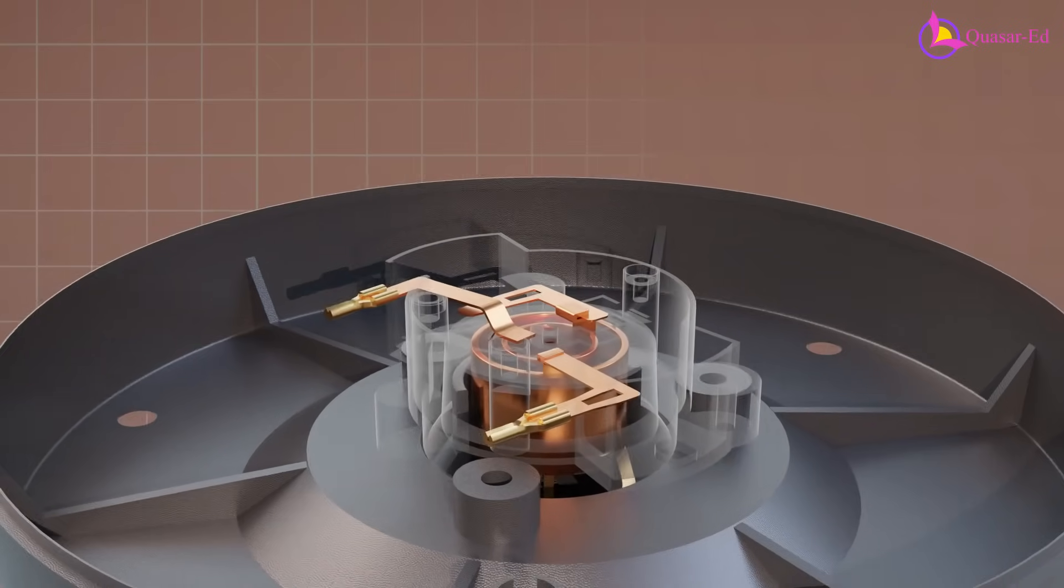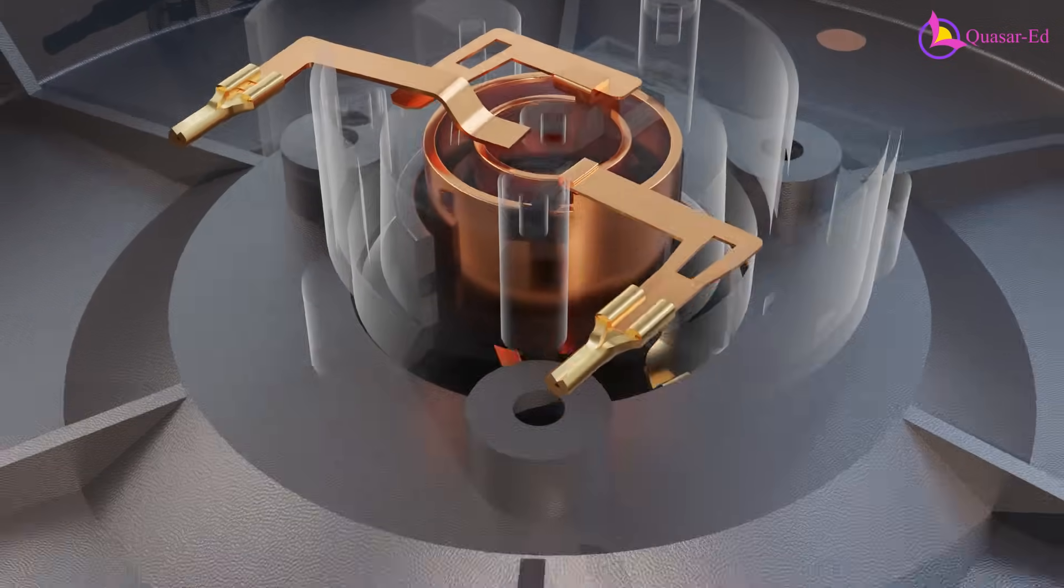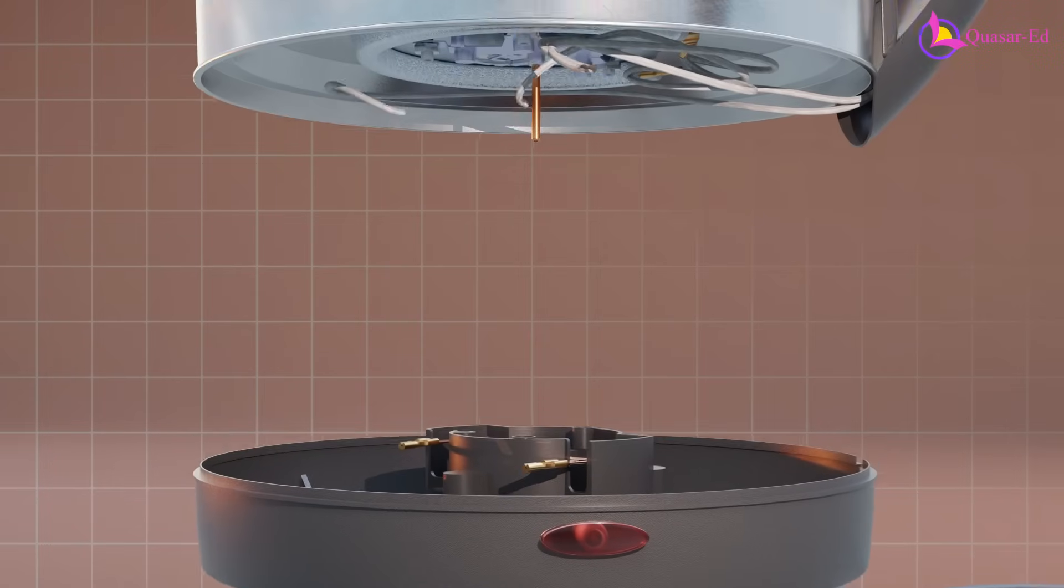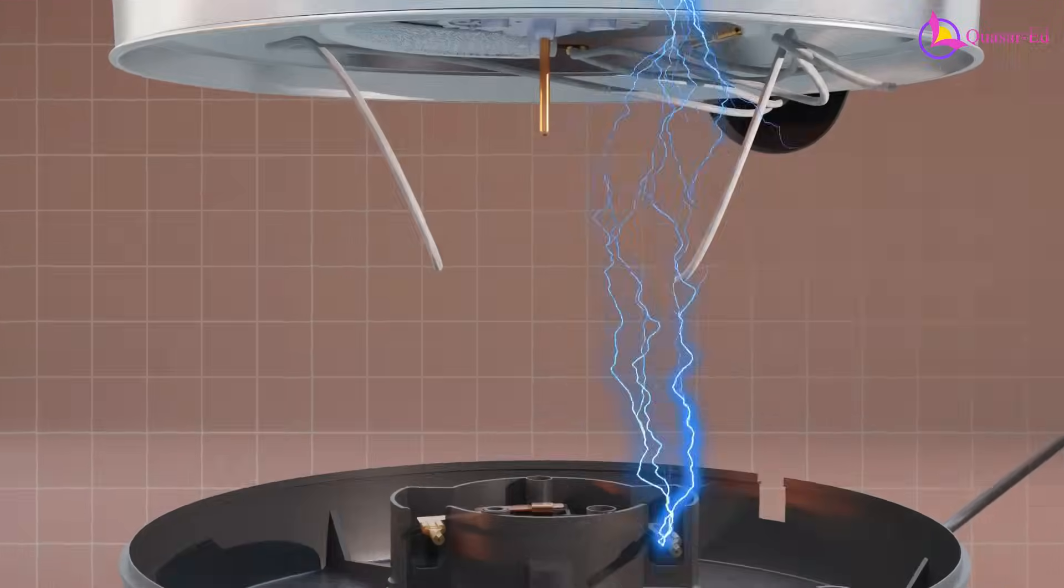Inside the kettle body, the two copper rings connect to the two copper terminals, allowing electricity to flow into the kettle. Let's explore how this electricity is used for heating.